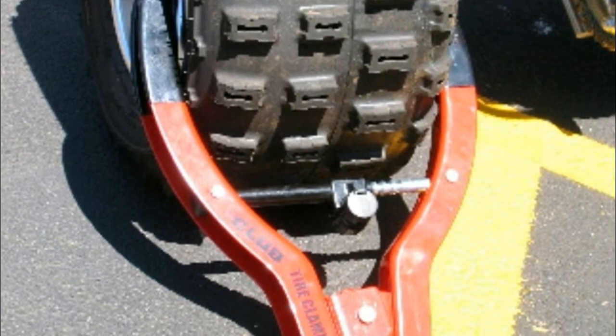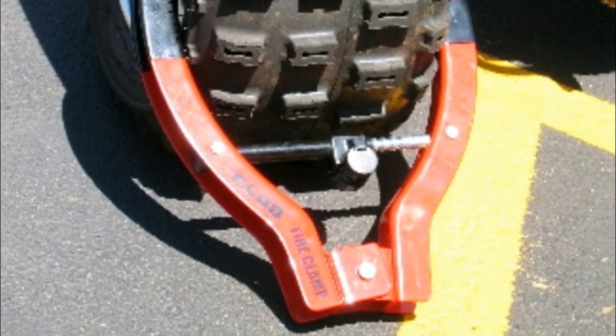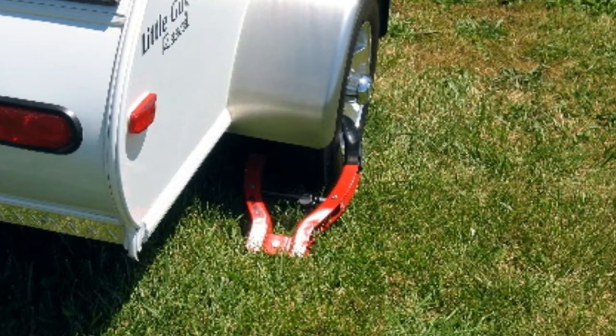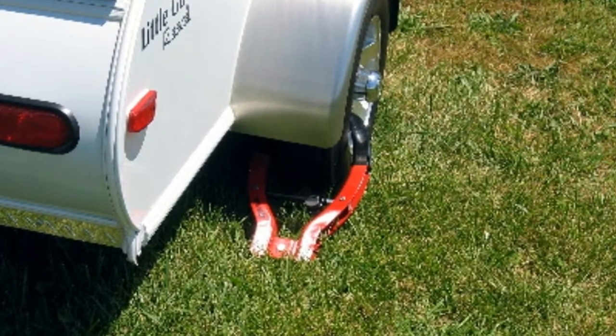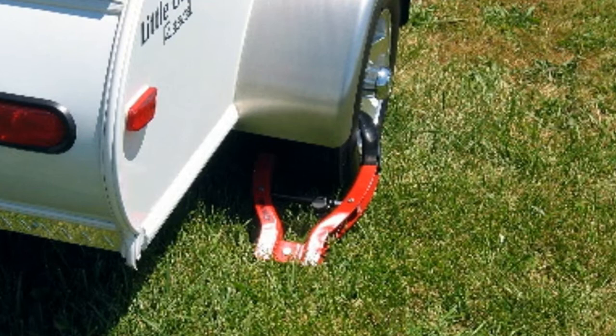The Club Tire Claw installs in a matter of seconds on your car, trailer, ATV, or motorcycle, and makes it virtually impossible for a potential thief to move your property.